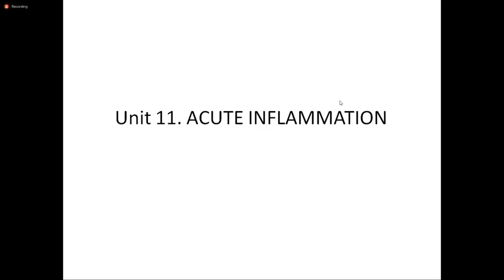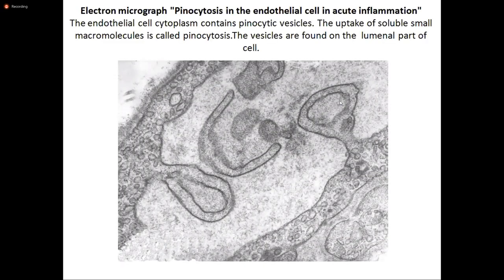The inflammatory response occurs in the vascularized connective tissue, including plasma, circulating cells, blood vessels, and cellular and extracellular constituents of connective tissue. The circulating cells include neutrophils, monocytes, eosinophils, lymphocytes, basophils, and platelets. The connective tissue cells are the mast cells which intimately surround blood vessels, and the connective tissue fibroblasts and occasional resident macrophages and lymphocytes. Inflammation is divided into acute and chronic patterns.